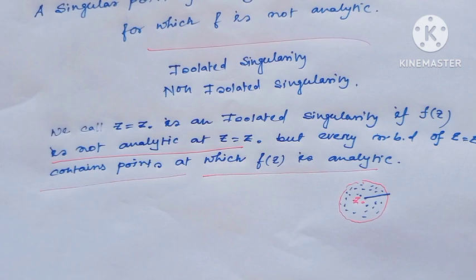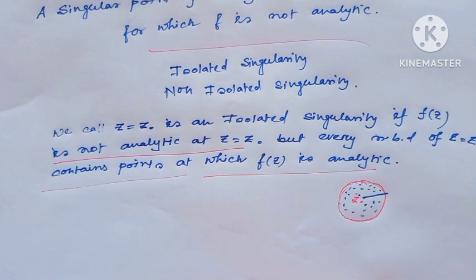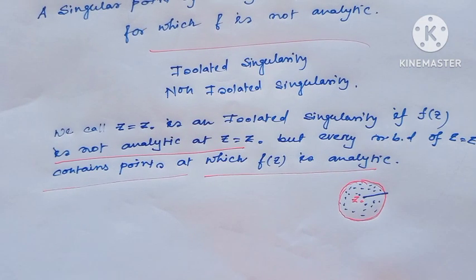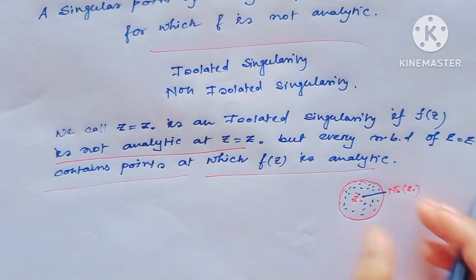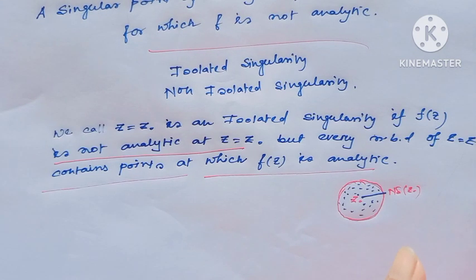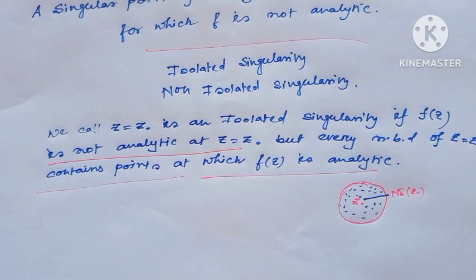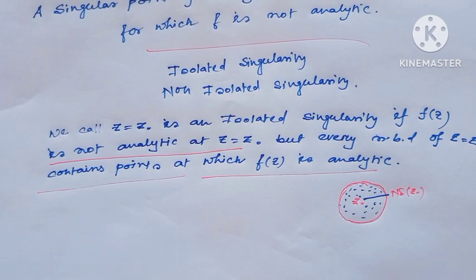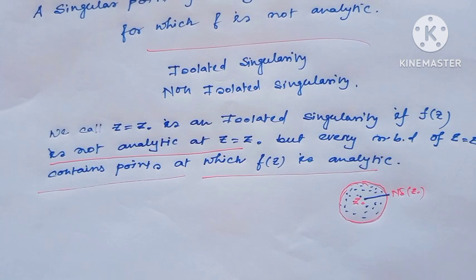That means the function is not analytic at the point z equal to z-naught, but this neighborhood always contains points at which the function is analytic — only the function is not analytic at the point z-naught. I hope all viewers have understood what is isolated singularity. Let's see one example.